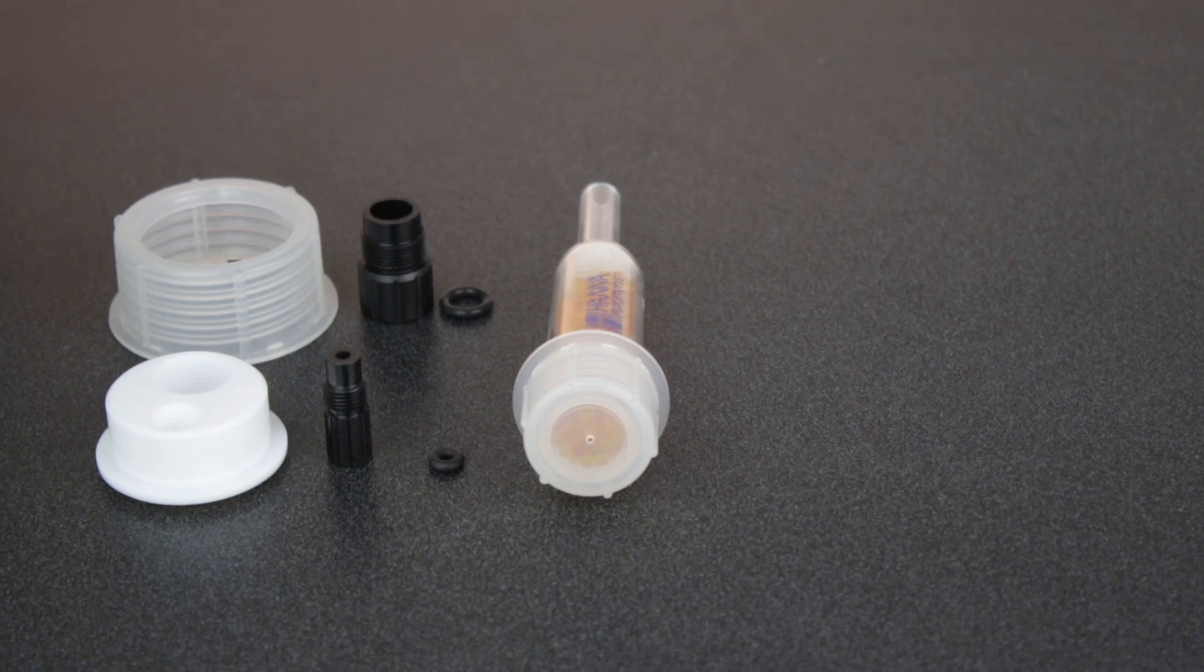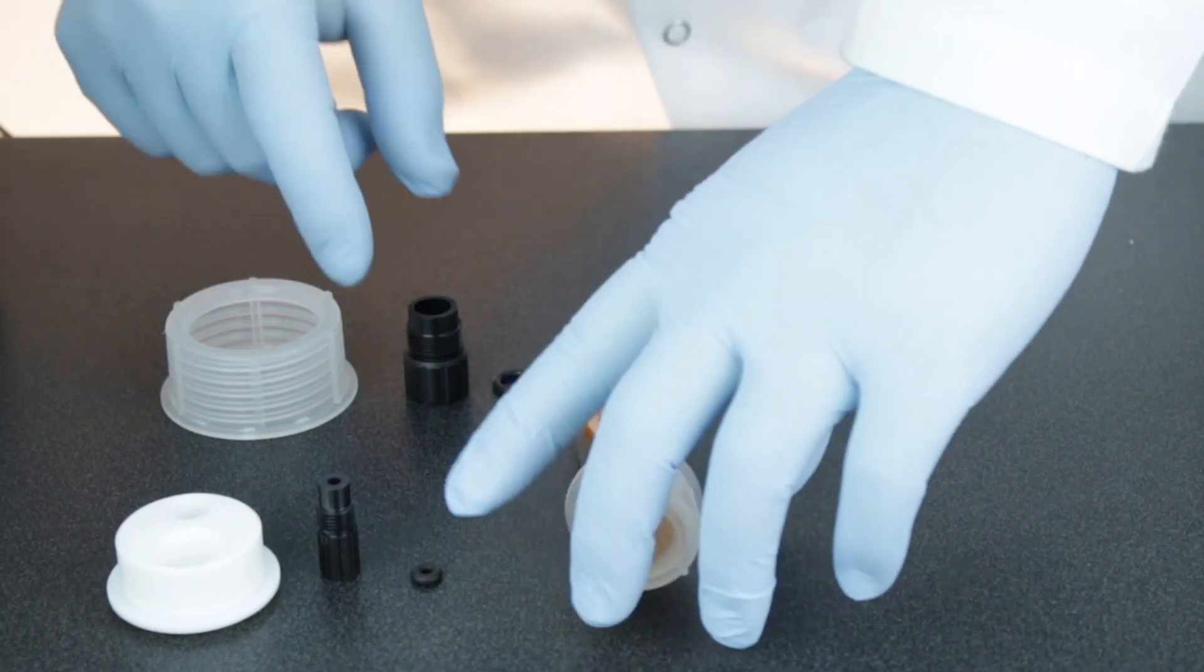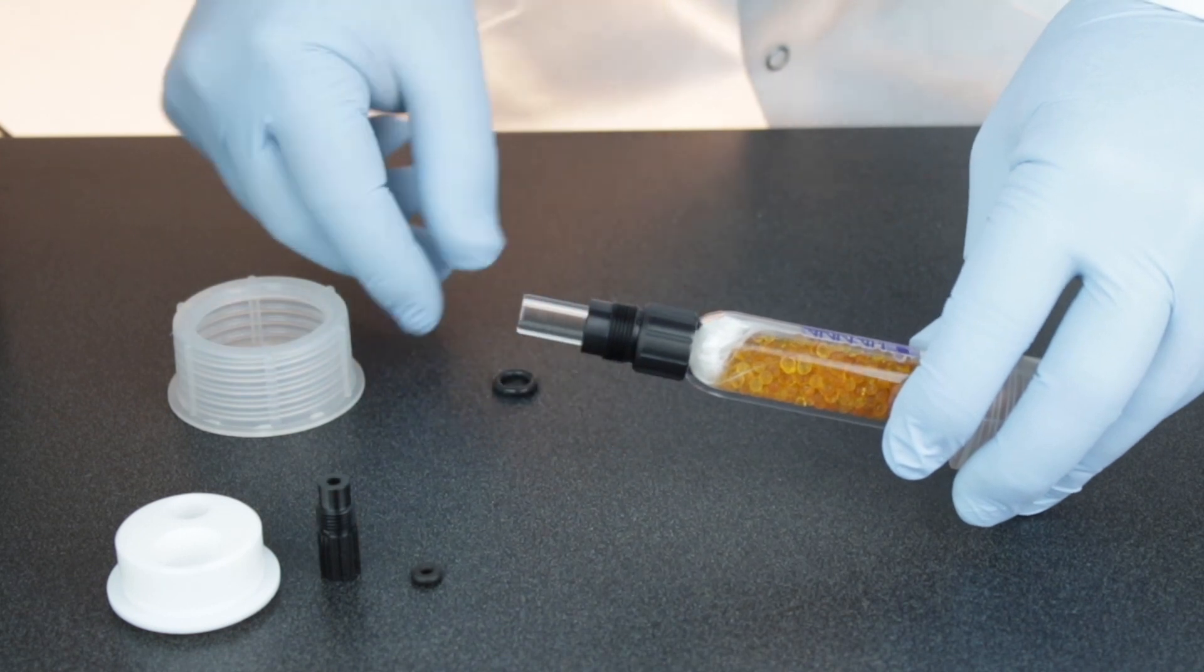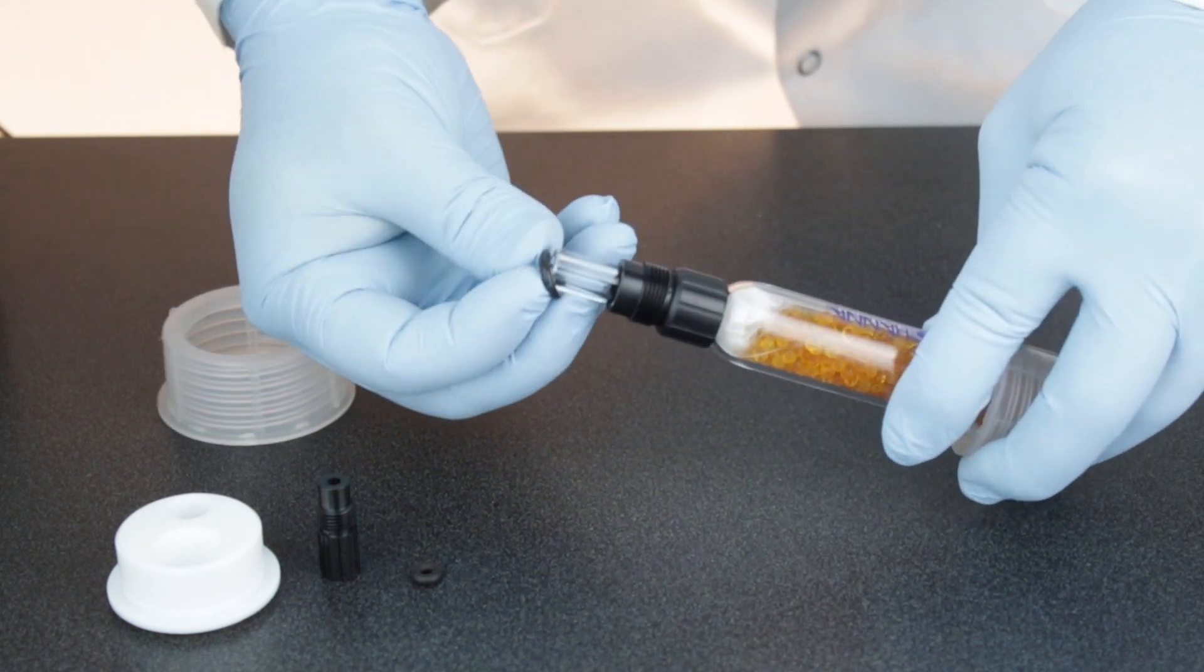To build this assembly, remove the 10 mm and 3 mm fittings and black O-rings from the bottle top. Start with a desiccant cartridge. Insert it through the 10 mm fitting and O-ring and tighten it onto the bottle top.